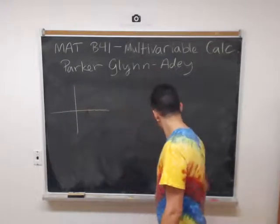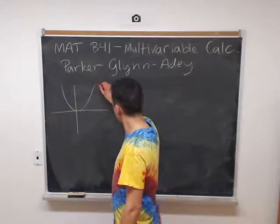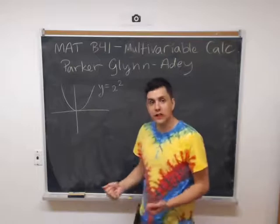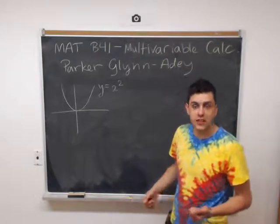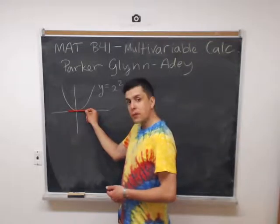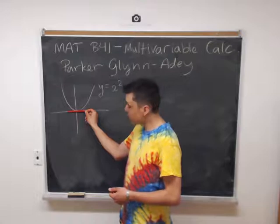In single variable calculus, we study curves in the plane, like y equals x squared. We study these curves by looking at their tangency properties. So here, the red pen is representing a tangent line at the origin to y equals x squared.